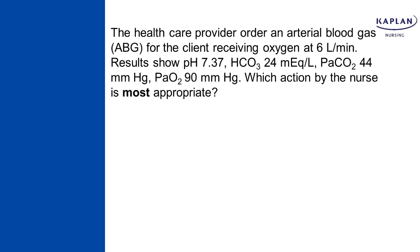When it comes to any lab value, you can interpret the values as you read the stem, or you can wait to see your answers to decide which values need interpreting. There's no right or wrong way — do what's comfortable for you. In this case, it's about the ABGs, and the ABGs are all within normal limits. So the question is asking: what is the most appropriate nursing action for a client who has appropriate ABGs?